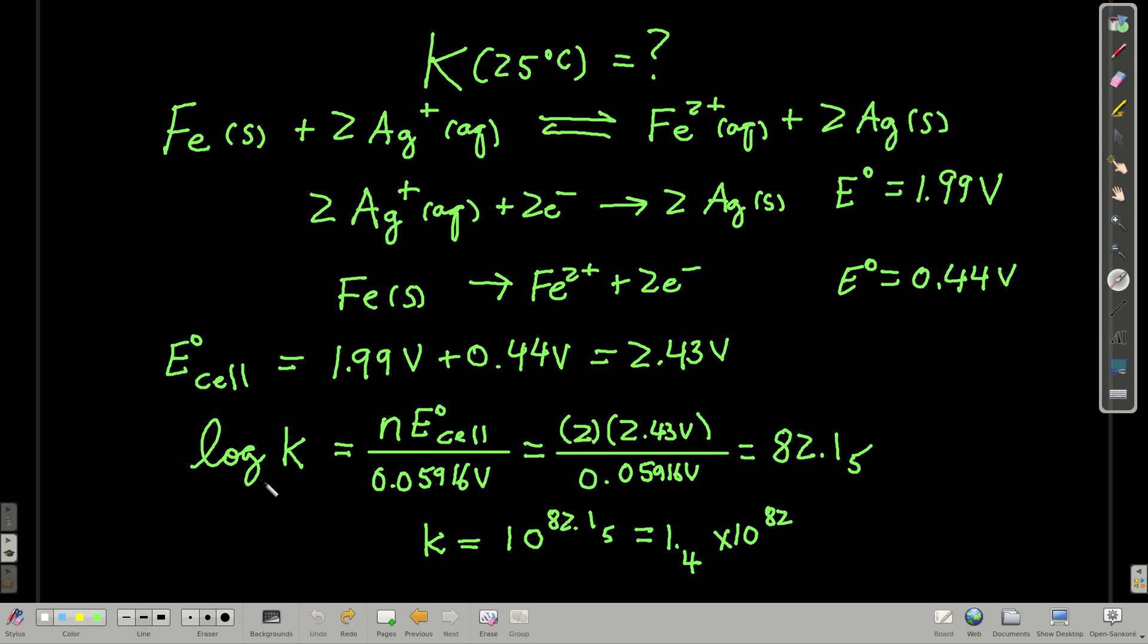And now, because we know that E zero of the cell is equal to 0.05916 log base 10 of the K over n, rearranging a little bit, we get log of K is equal to this. 2 moles of electrons are transferred. That's where this 2 comes from. This is E zero of the cell, 0.05916. Plugging in, we get 82.2. That means roughly K is equal to 1.4 or so times 10 to the 82nd. Huge, which is common for these redox reactions.